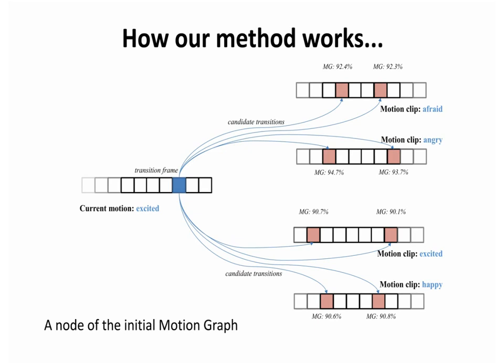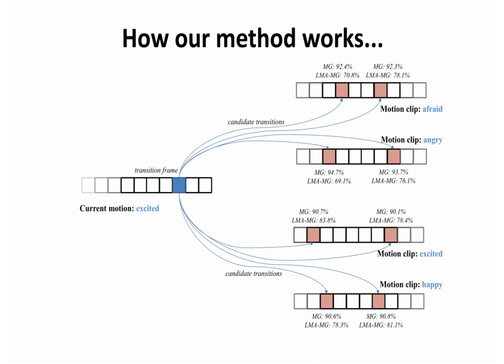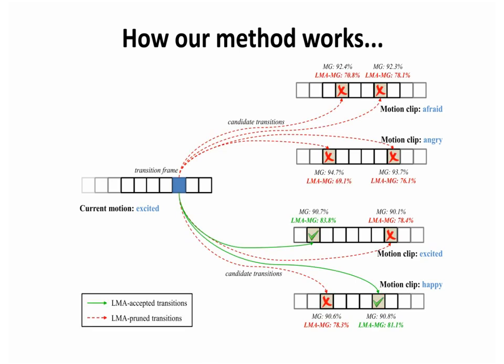A transition node in the standard motion graph may be connected to motions with different motion styles, since body postures may be matching. Our LMA-based algorithm filters the graph to prune these redundant transitions, preserving only those with a highly similar motion style.